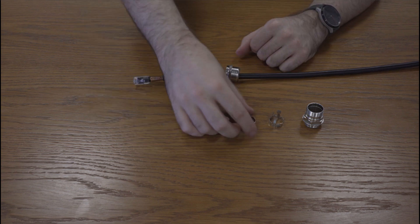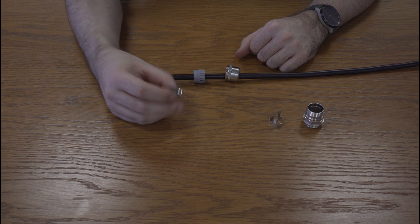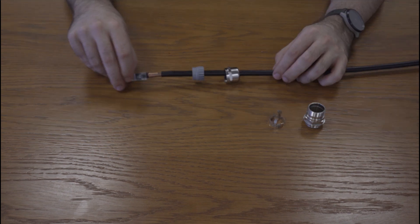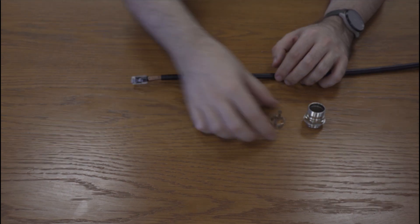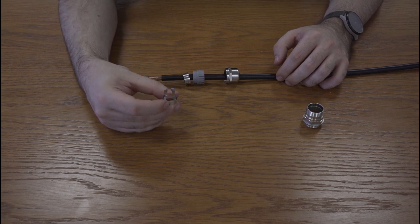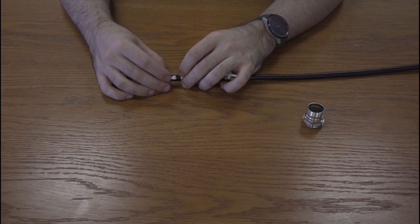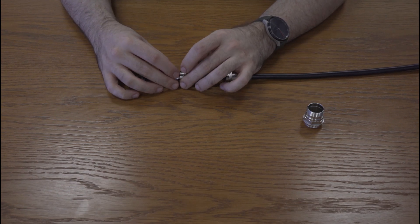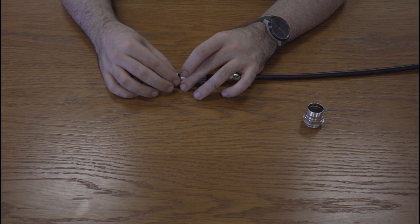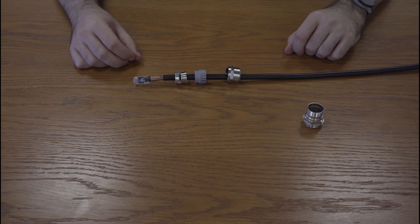You then slide the metal ring on, wider end first, like so. Then the metal piece with the four fingers, fingers first, and then make sure that these fingers are inserted inside the metal ring, like so.